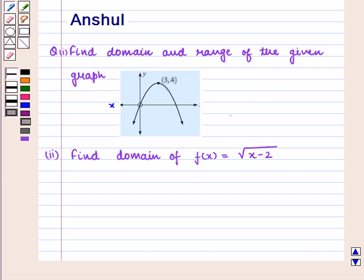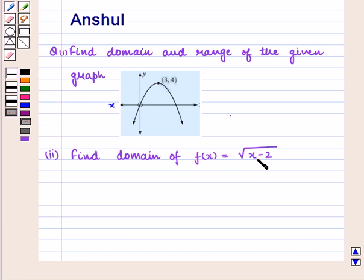Hello and welcome to the session. In this session, we are going to discuss the following question: the 1st part asks us to find the domain and range of the given graph, and the 2nd part asks us to find the domain of the function f of x equals the square root of x minus 2, the whole. Now let us start with the solution.